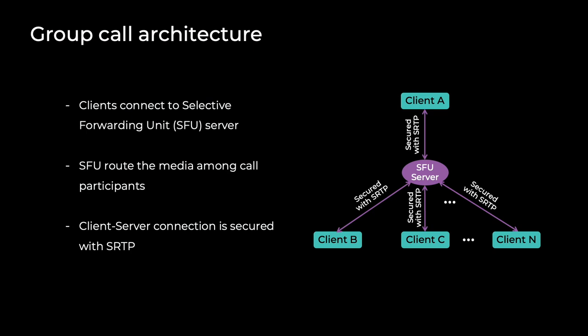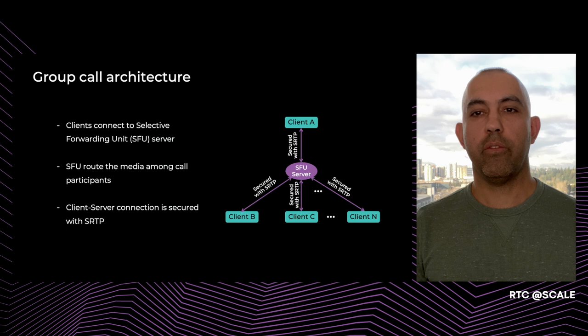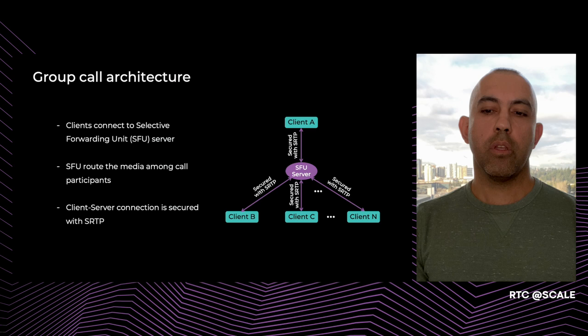Let's start with an example architecture for group end-to-end encryption. With WebRTC clients, one way to support group calls is based on a Selective Forwarding Unit server, where each client connects and sends their media packets to the server, and the server distributes them among the participants. The client-server connection is secured by SRTP — Secured Real-Time Transport Protocol — which provides encryption and authentication for media packets. In P2P calls, SRTP is established between the two participants. However, for group calls, it is established for the client-server connection, and this encryption is terminated at the server. Obviously, this does not provide end-to-end encryption. Even though the server may not access the media, we want to guarantee it cannot.